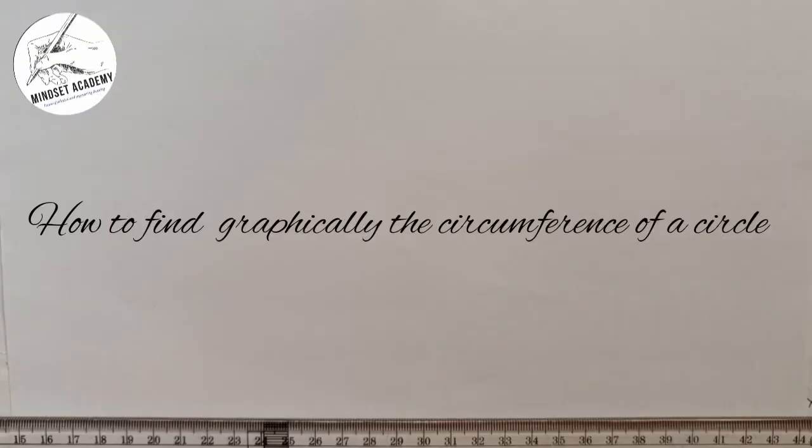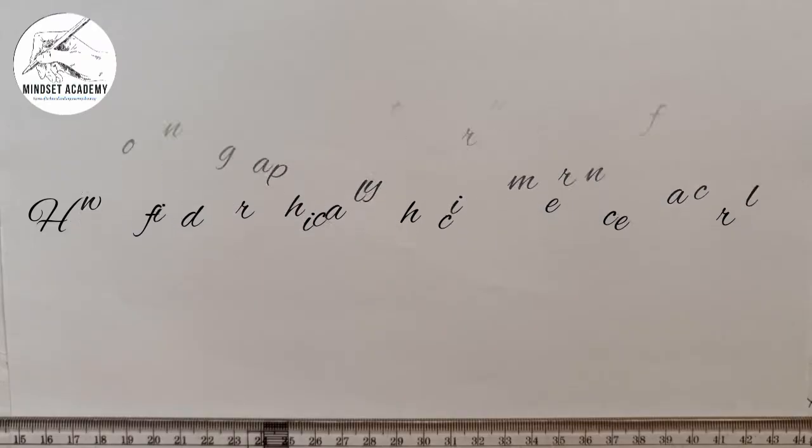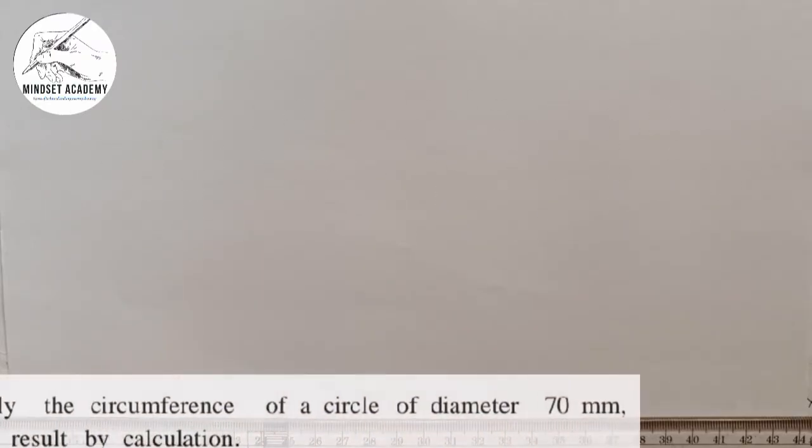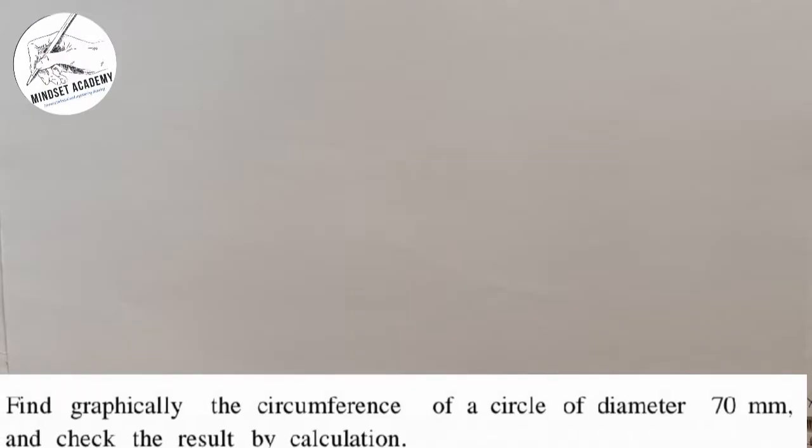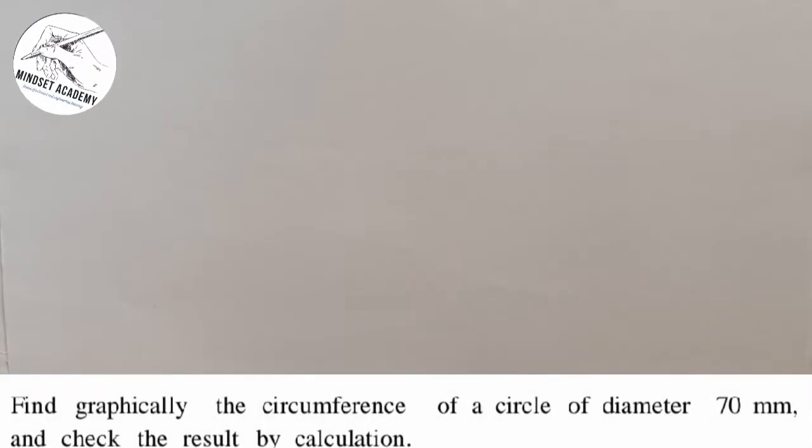Welcome to my channel. We'll be solving this problem in geometric construction where we are told to find graphically the circumference of a circle of diameter 70mm and check the result by calculation.